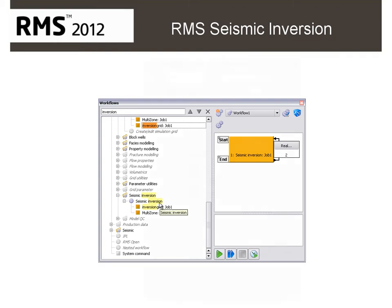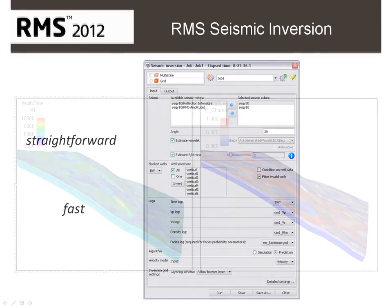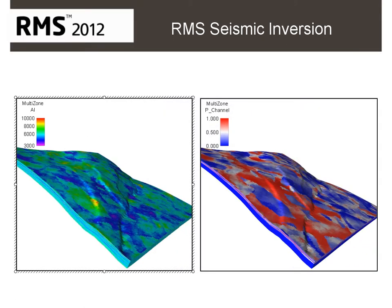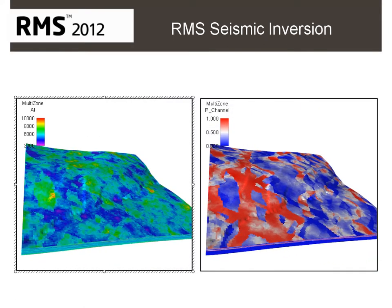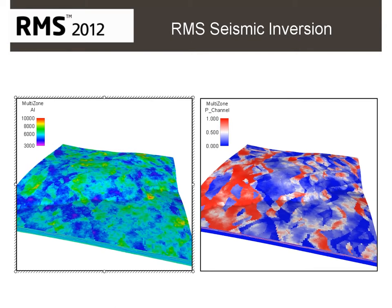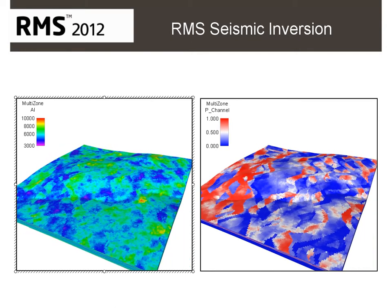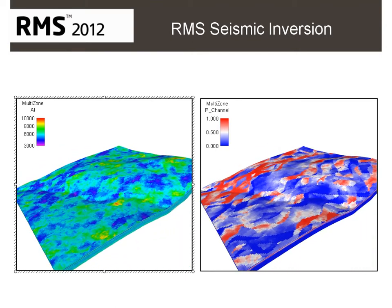Setting up and running the seismic inversion is both straightforward and fast. RMS delivers the only inversion tool in today's market which can directly produce Feishi's probability cubes — perfect input for continued modeling and an excellent QC tool.